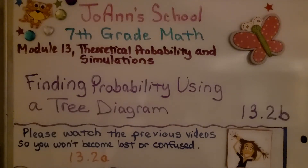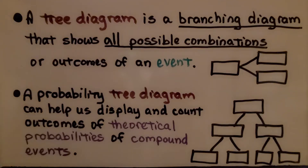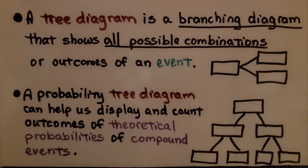Lesson 13.2b: Finding Probability Using a Tree Diagram. A tree diagram is a branching diagram that shows all possible combinations or outcomes of an event. A probability tree diagram can help us display and count outcomes of theoretical probabilities of compound events.